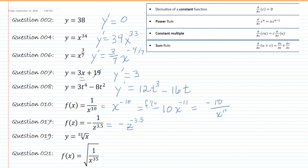When you bring the 3.5 down, and there's a negative already out front, so a negative and a negative makes it a positive 3.5. And then z to the negative 3.5 minus 1, so negative 4.5.